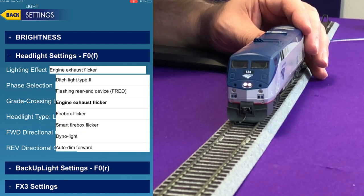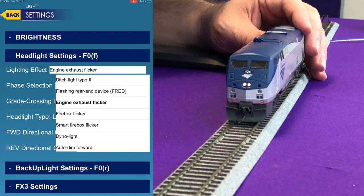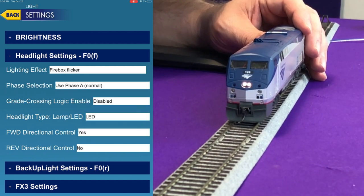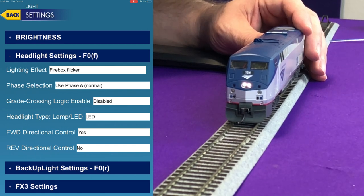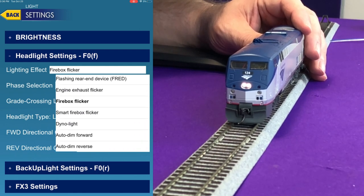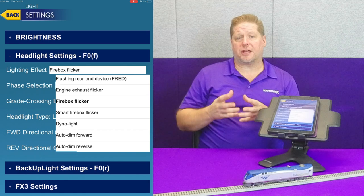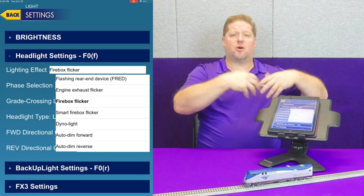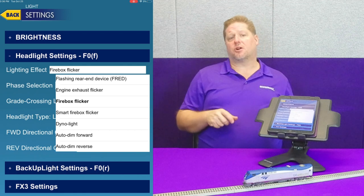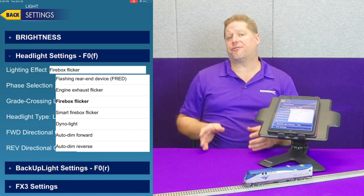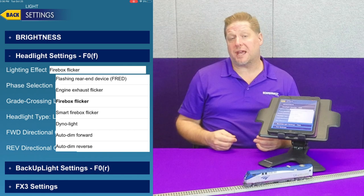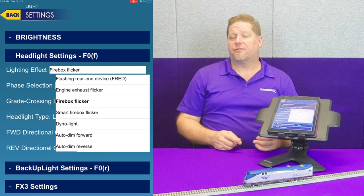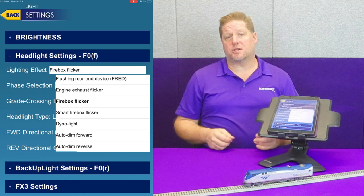Next is the firebox flicker, primarily used on a steam locomotive to simulate the flickering you'd see in a firebox. We also have a smart firebox flicker — in a diesel engine it won't do anything, but in a steam locomotive it flickers brighter and increases in intensity in conjunction with the sound of fireman Fred shoveling coal, because the firebox doors are open while he shovels. That effect is implemented on our HO General modeled in 1862 — check that video out in Soundtrack's YouTube history.